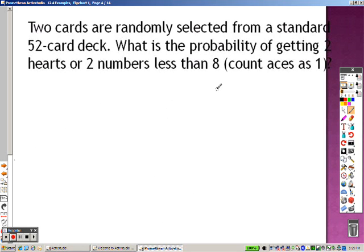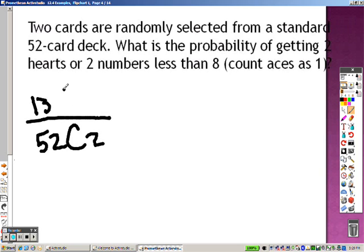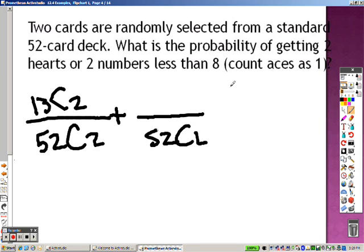So what's the probability of getting 2 hearts or 2 numbers less than 8? Okay, so 2 hearts, we basically just did that. The bottom means we're choosing 2 cards out of 52, and there's 13 hearts in a deck. Or means plus, the bottom is still 52, choose 2, but the numbers less than 8, and they count an ace. So that's ace, 2, 3, 4, 5, 6, and 7.